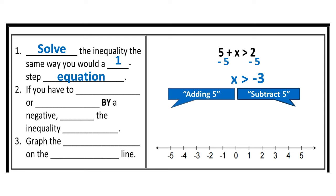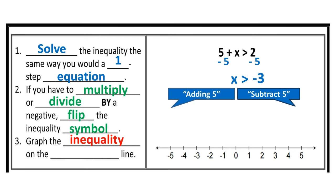One of the few differences between solving equations and solving inequalities is: if you have to multiply or divide by a negative, flip the inequality symbol around. In this case, we subtracted 5 from both sides, so I'm not going to touch the inequality symbol. Now all I need to do is graph the inequality on the number line.